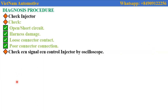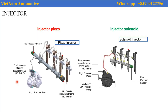This is the diagnostic procedure for trouble related to the injector common rail drive system. You should remember: injectors of a common rail drive system have two types — piezo and solenoid.